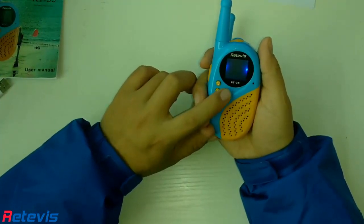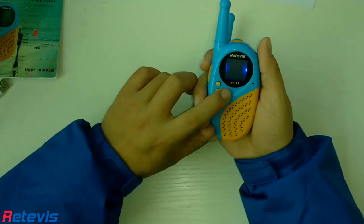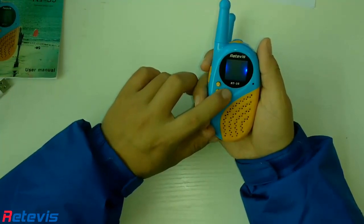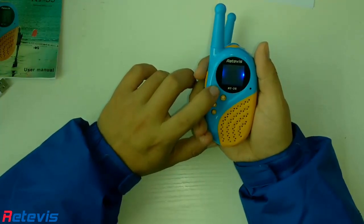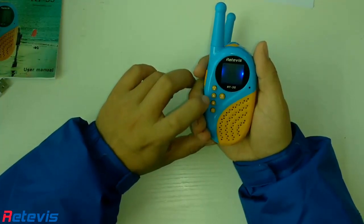When you want to talk with your partner when your hands are full, no worries, RT35 can help you. Open the VOX function, then you can talk to the microphone without pressing the PTT.